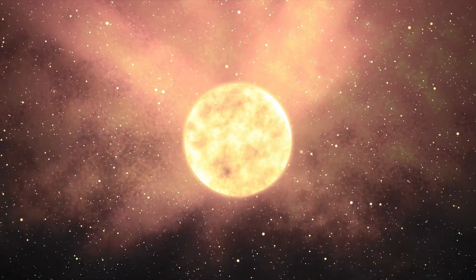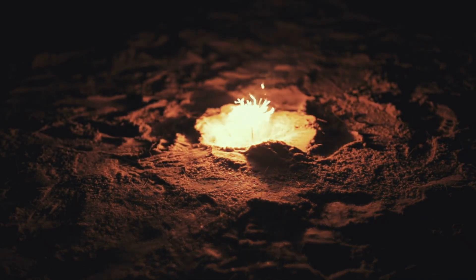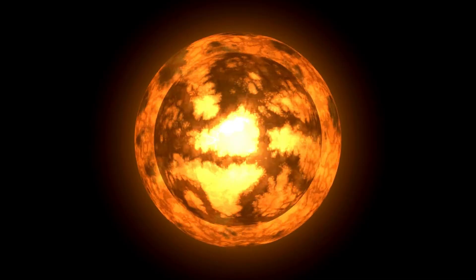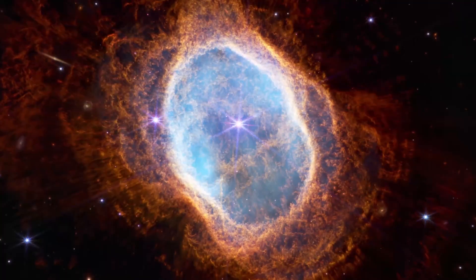Deep within, convection currents churn, carrying energy from the core to the surface. These currents create bright spots, like solar flares on steroids, adding to Betelgeuse's erratic glow. It's a star that refuses to sit still, a living, breathing enigma.